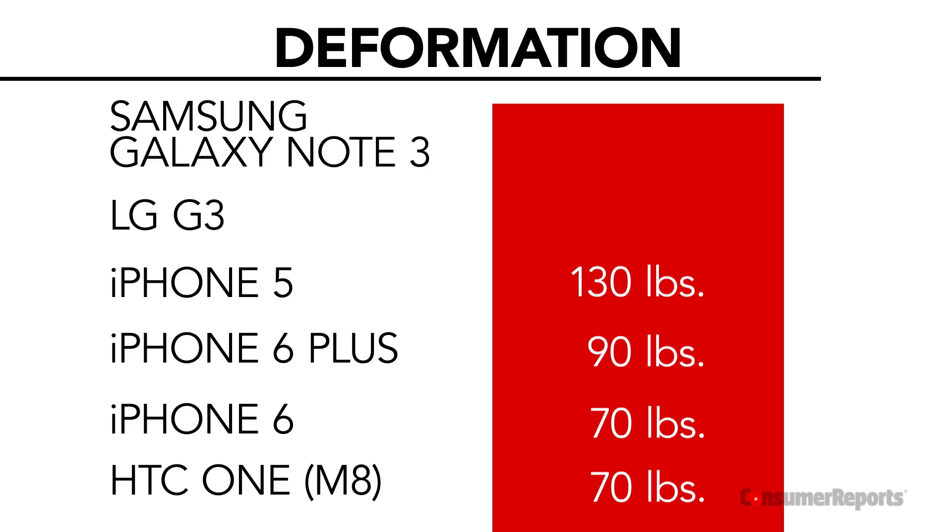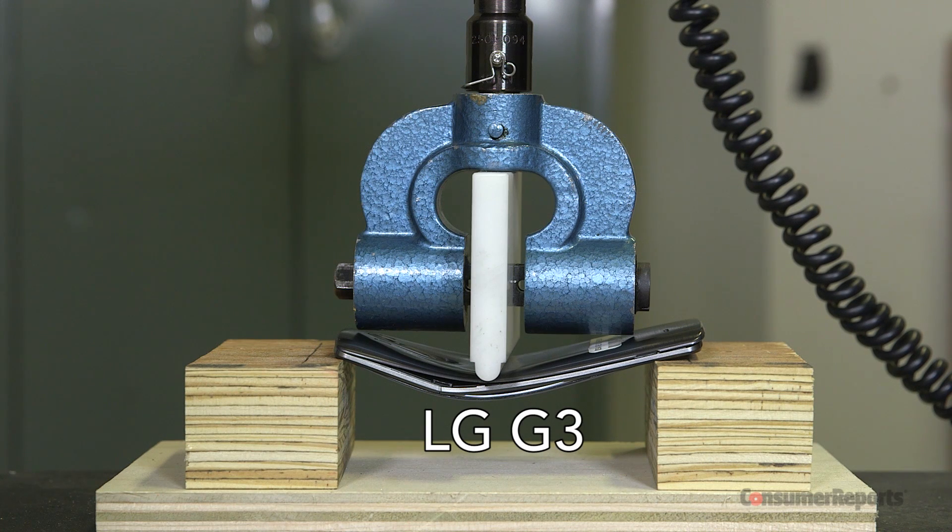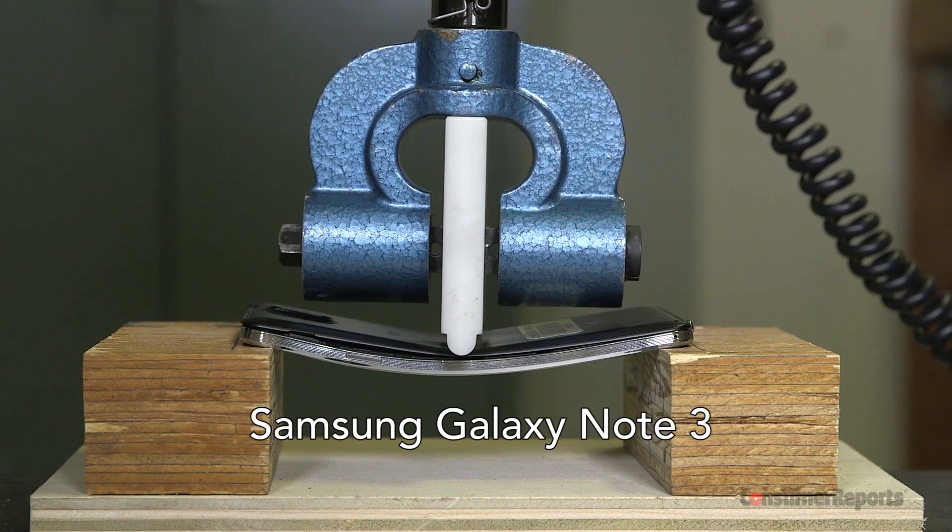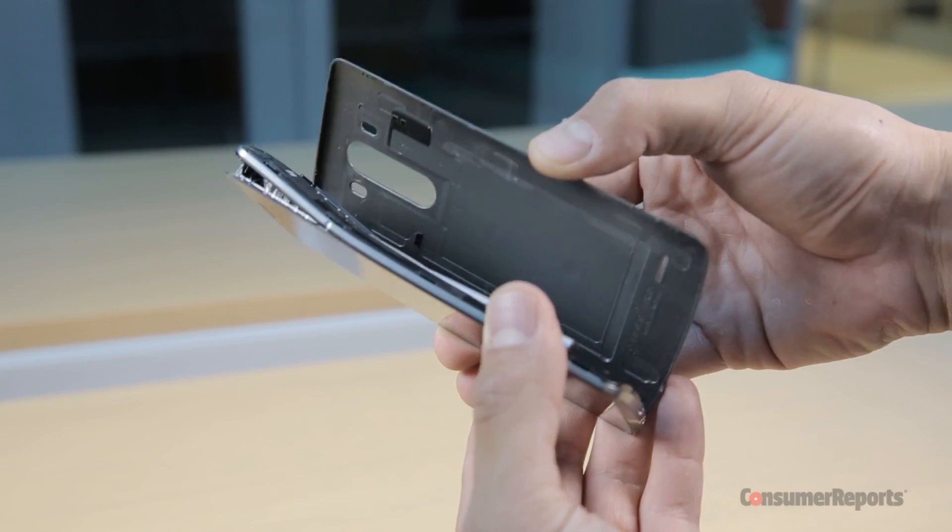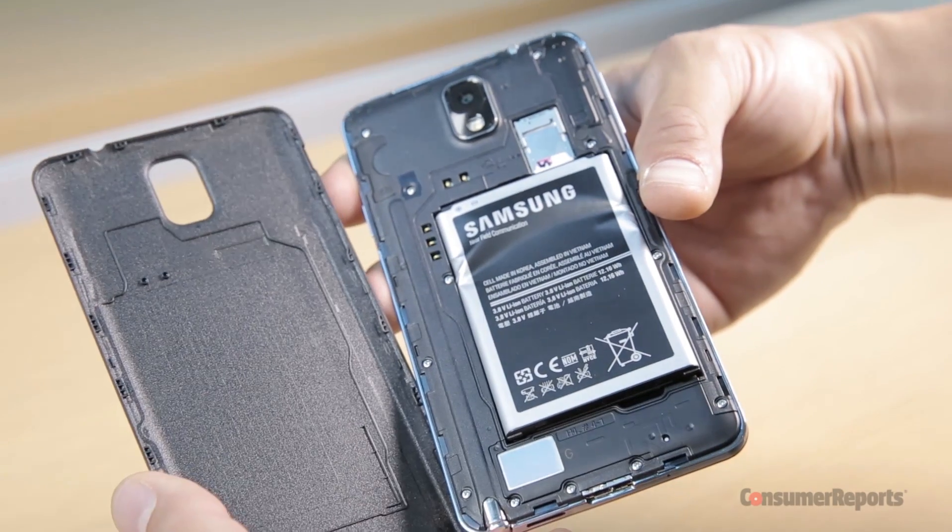Finally, there was the LG G3 and Samsung Galaxy Note 3, which sprang back to form up until we applied 130 pounds and 150 pounds respectively. At that point, their screens separated from their cases and stopped working.